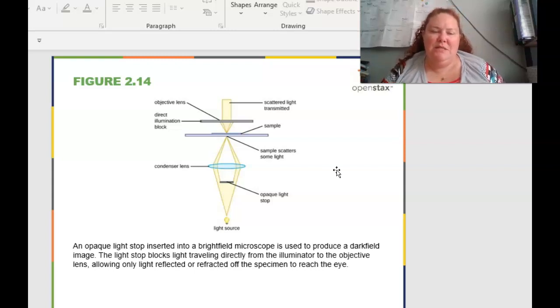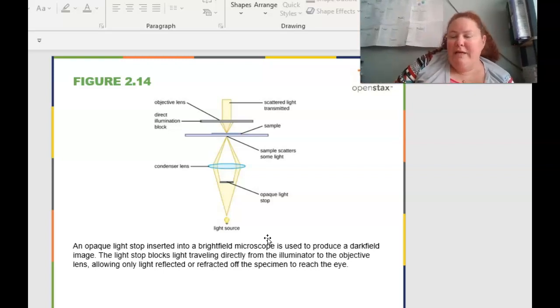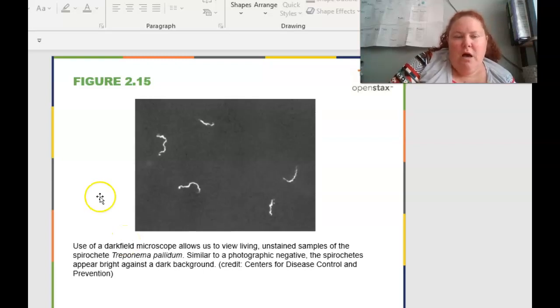So we will be using 100X objective lenses quite extensively in lab. And this is to improve resolution. And again, the reason it works is because it changes refractive indices and makes them a more sharpened image. An opaque light stop inserted into the bright field microscope is used to produce a dark field image. The light stop blocks light traveling from the illuminator to the objective lens, allowing only the light reflected or refracted off a specimen to reach the eye. This is important guys, because we don't want to burn out your eyeballs.